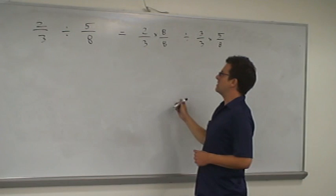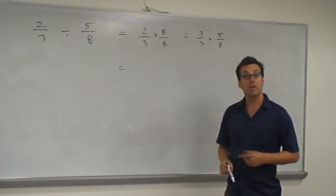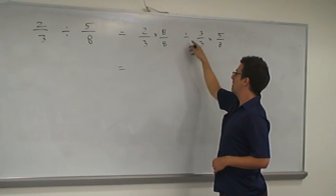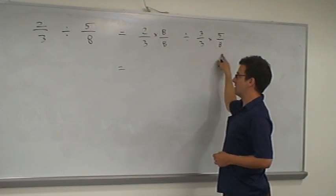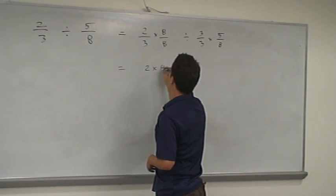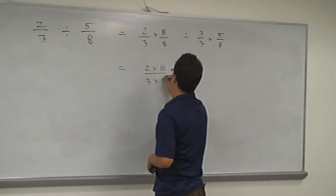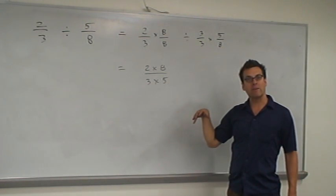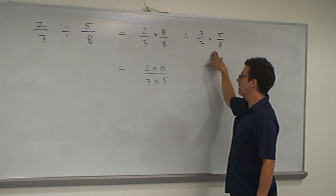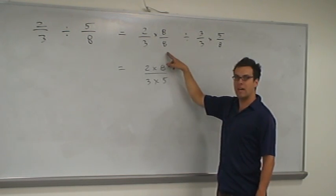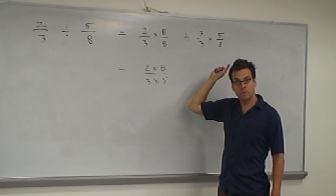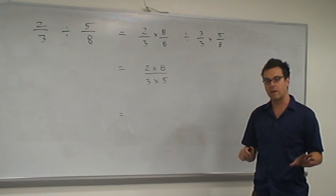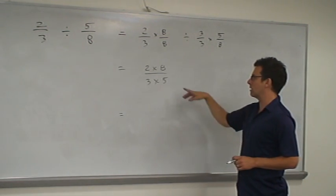Our common denominator method tells us that once we have common denominators, the correct procedure is to divide straight across the top. So the fraction two times eight over three times eight, divided by three times five over three times eight, is equivalent to two times eight over three times five — because, remember, the common denominator method says once we have the common denominator, here three times eight, we just divide across the top. Our answer is two times eight over three times five.